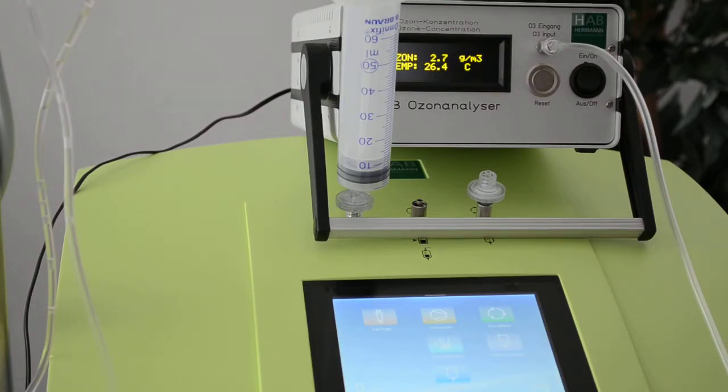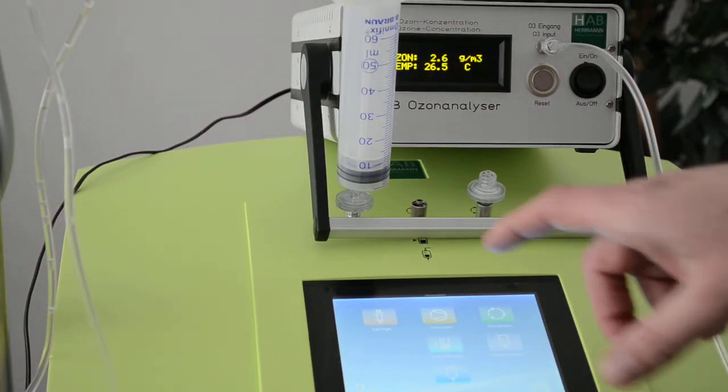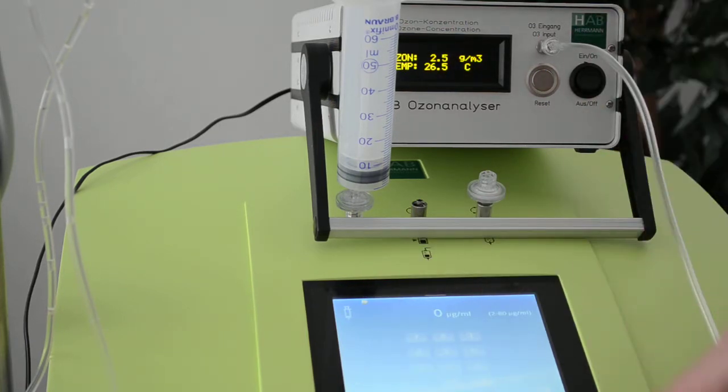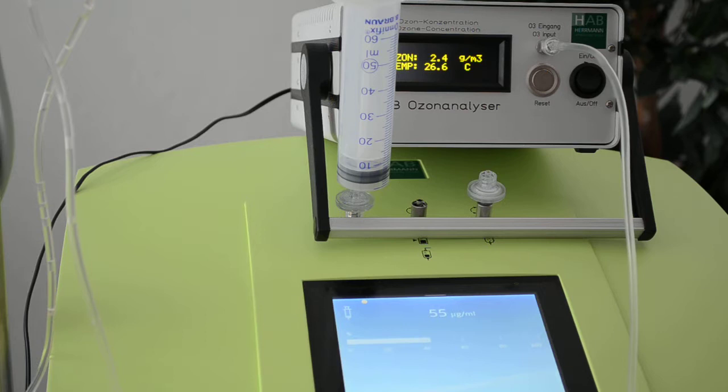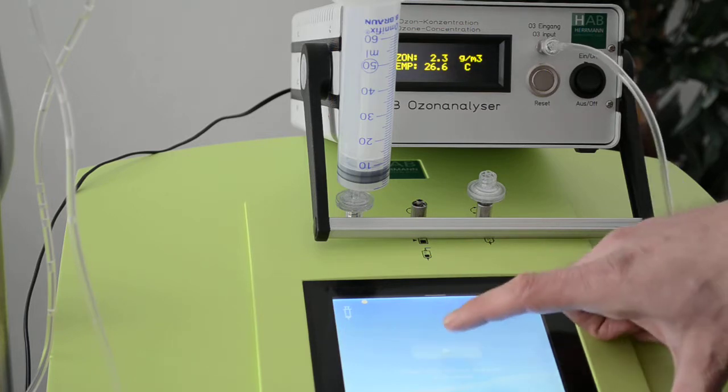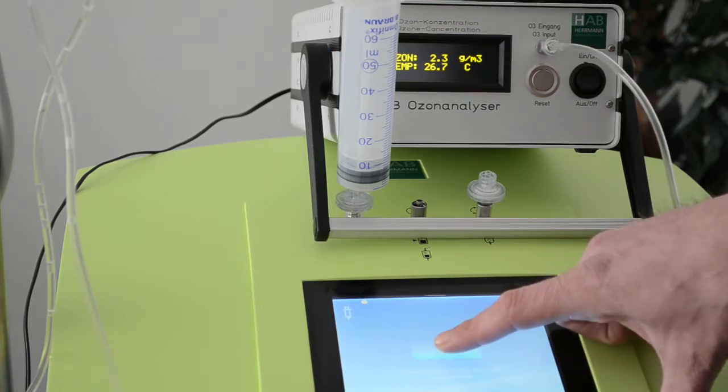Now we will continue with the syringe. I'm choosing the syringe function and putting it in concentration mode. Let's say 55. I confirm. Now the device is creating the ozone concentration, so we will fill the syringe.